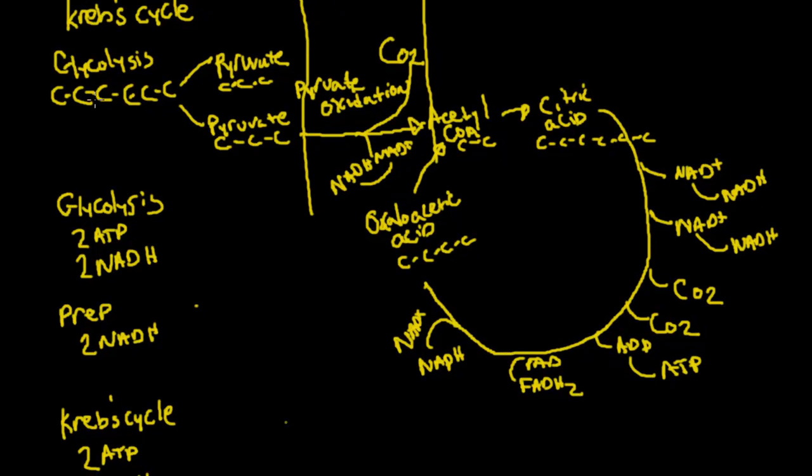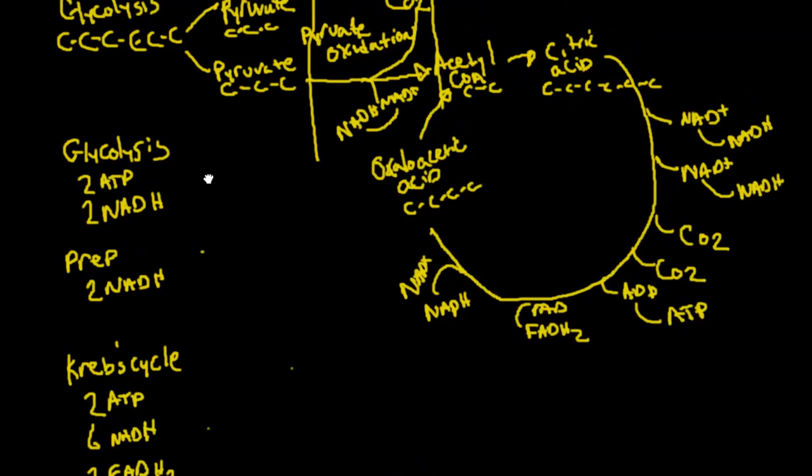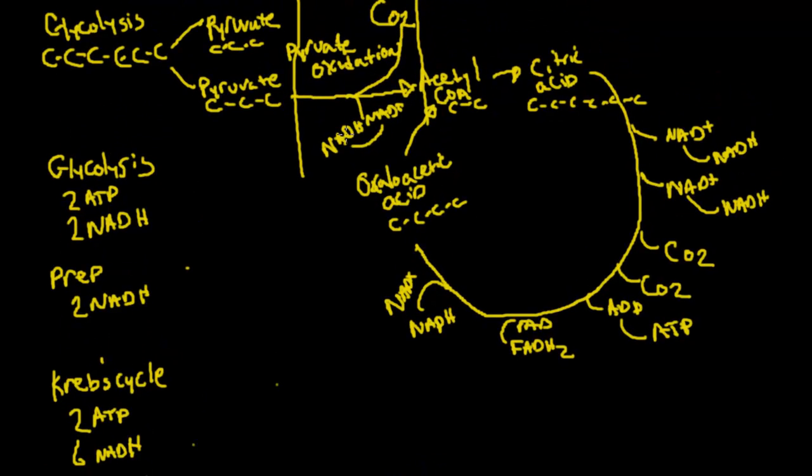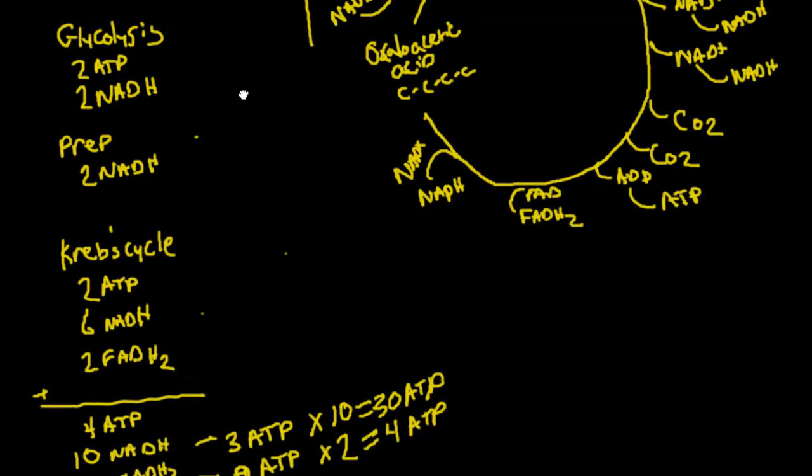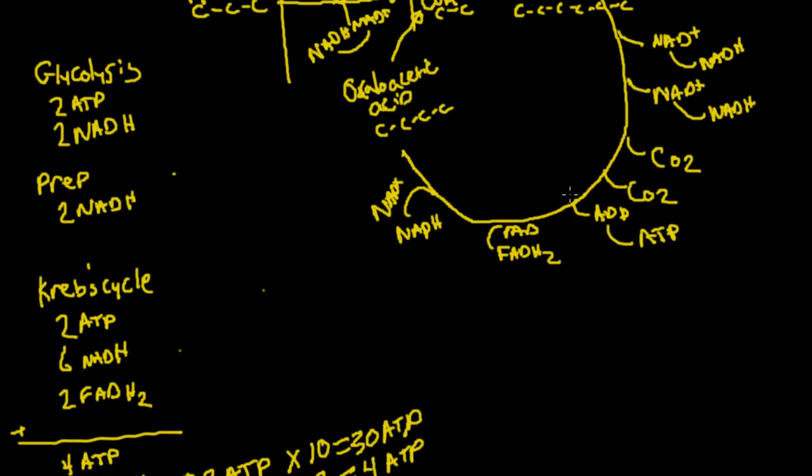So glycolysis netted us 2 ATP and 2 NADH. And for our prep phase, we've got 2 NADHs. Because right here, we have 2 pyruvates, so this happens twice. Then for the Krebs cycle, we have an ATP. But remember, that happens twice. So that's going to give us 2 ATP.